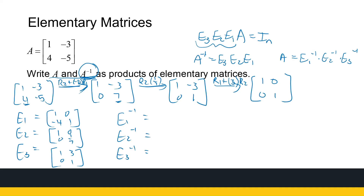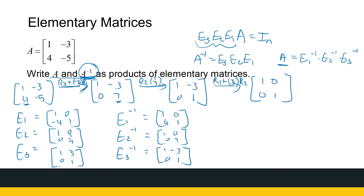E1 inverse: the opposite operation is adding 4 times row 1, so it's [1, 0; 4, 1]. E2 inverse: multiply by 7 rather than 1/7, so it's [1, 0; 0, 7]. E3 inverse: use minus 3, so it's [1, -3; 0, 1]. So we can write A as a product of these matrices. You can test this — multiply E1 inverse times E2 inverse times E3 inverse and check that you get A. It's a good way to verify your calculations are correct. And that is elementary matrices.